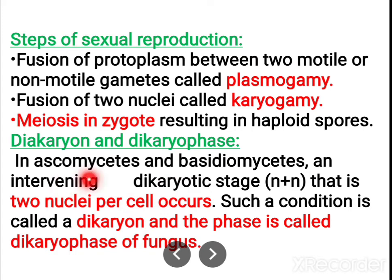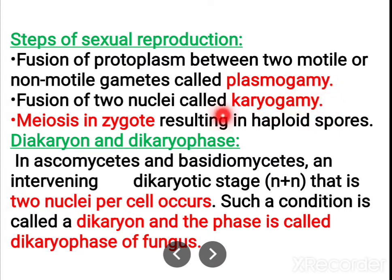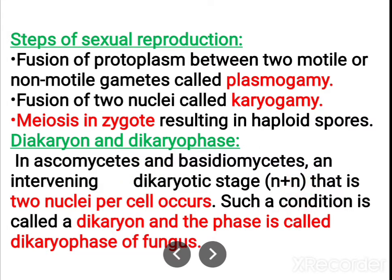In ascomycetes and basidiomycetes, a dikaryotic stage structure is present. N plus N means there is no fusion of nuclei — karyogamy does not occur. Only plasmogamy occurs; there is no fusion of nuclei. Because of that, within the cell you can see two nuclei. This type of condition is called dikaryotic or dikaryophase of the fungus.